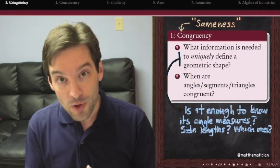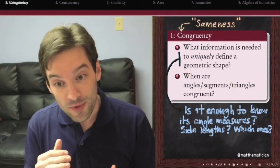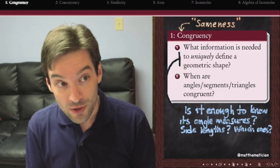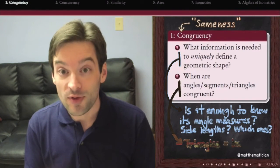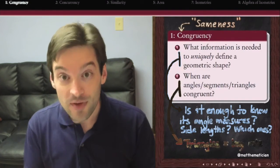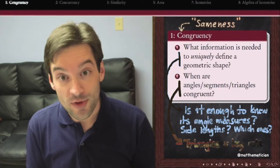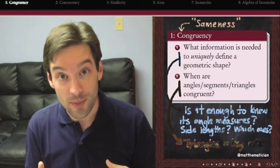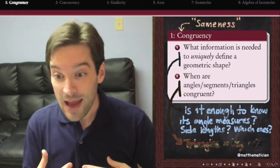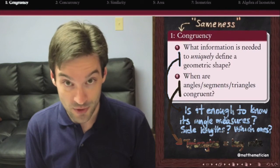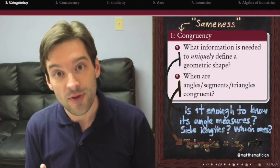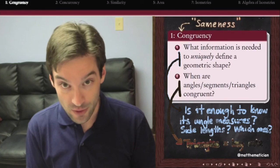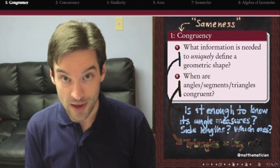And then second, we're going to apply those notions to some simple geometric objects: congruency of angle measures, congruency of line segments, and congruency of triangles. Triangles will play an important role everywhere throughout our study of geometry, and so in this chapter we'll have the opportunity to look at congruency criteria for triangles.